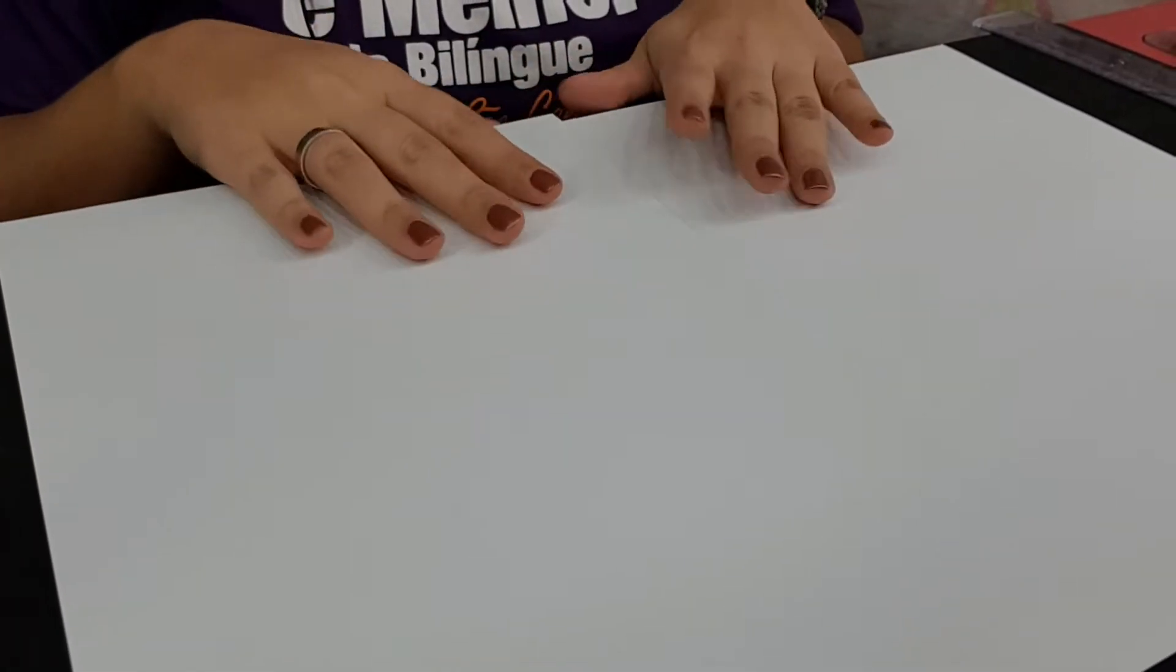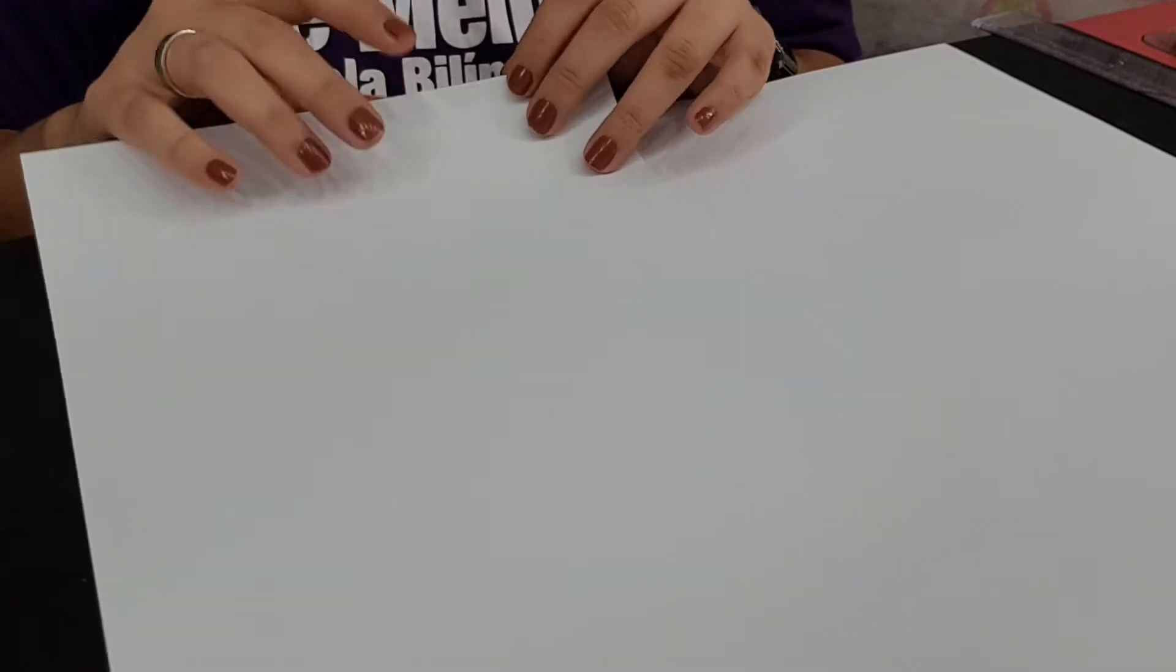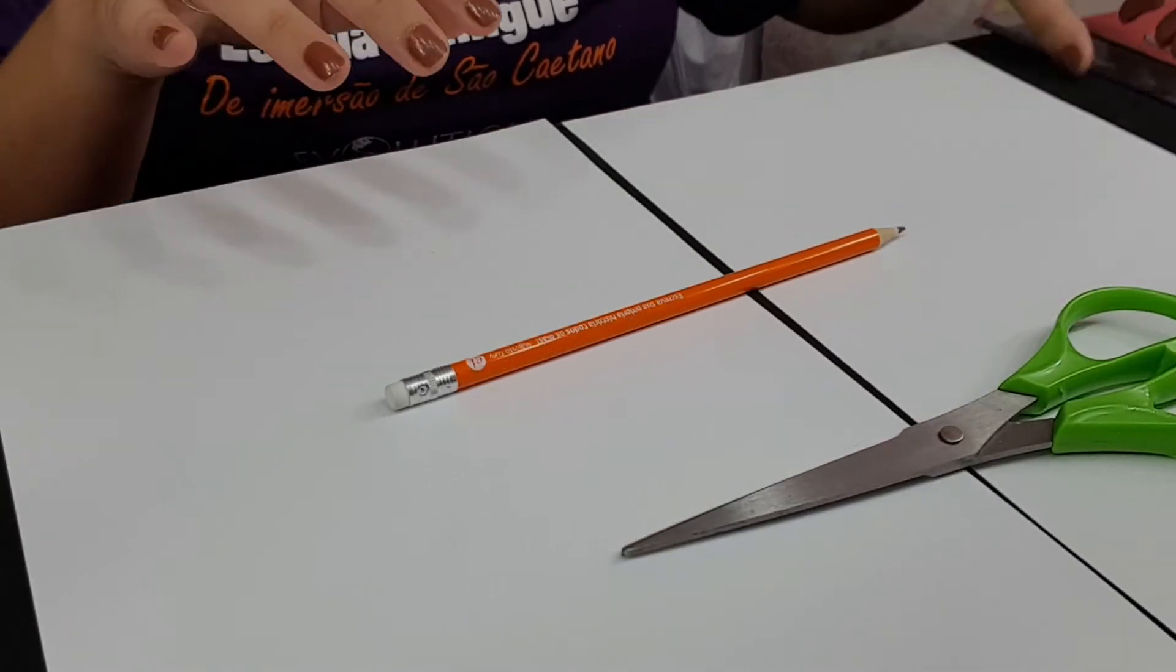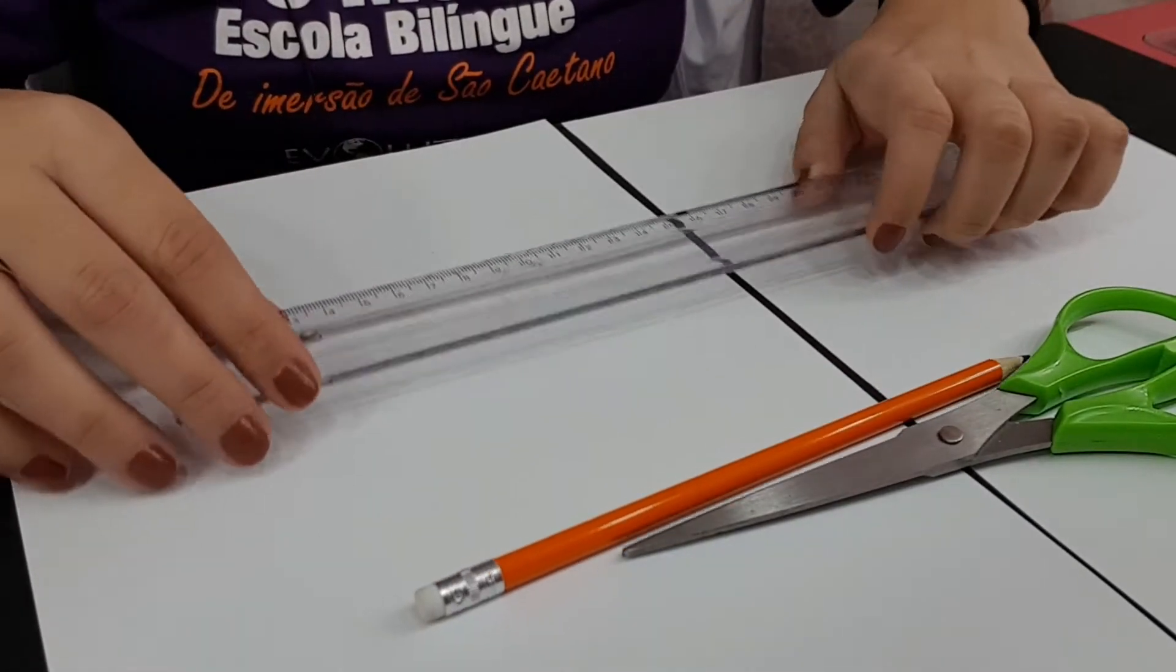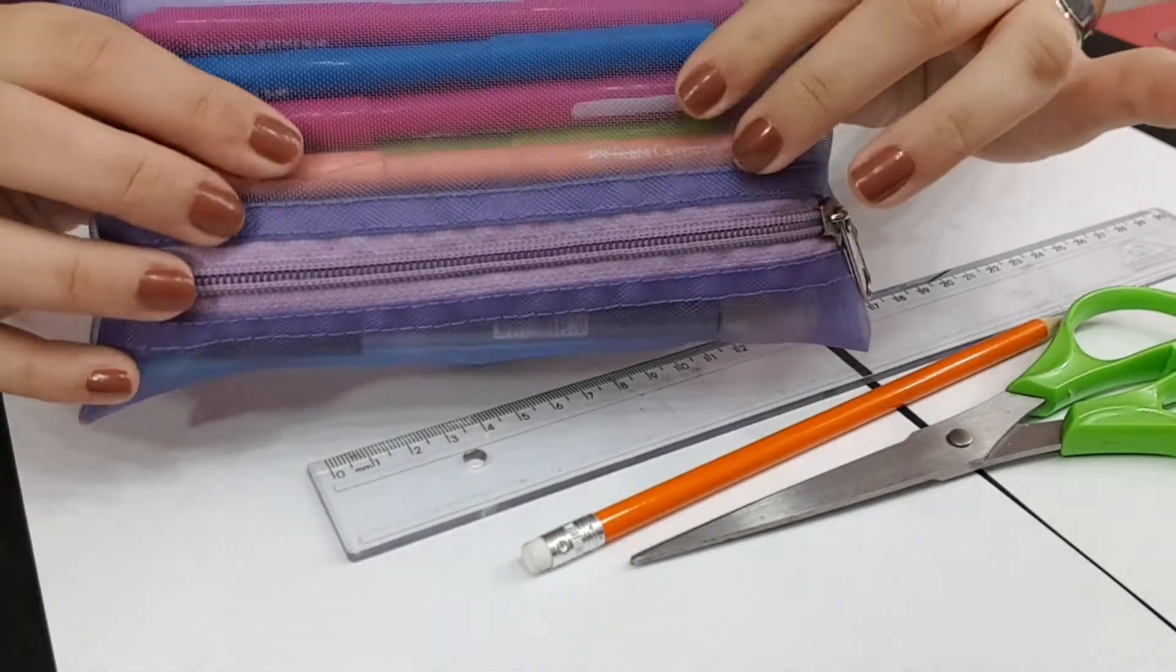To make our memory game, we are gonna use paper and I'm using a stiffer paper, so you can use cardboard. So paper, scissors, a pencil, ruler and a marker, but you can also use colorful markers.